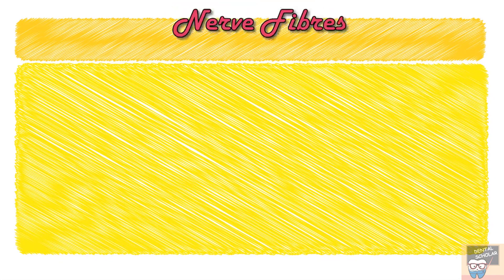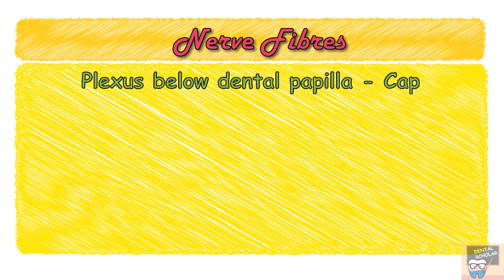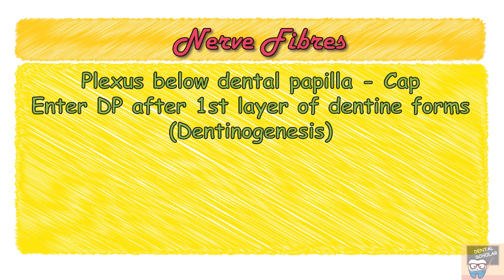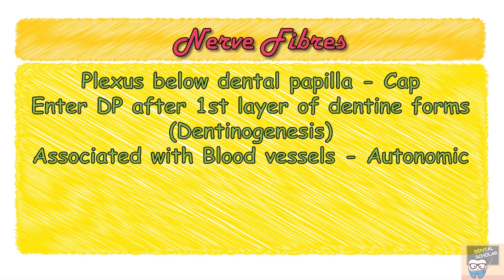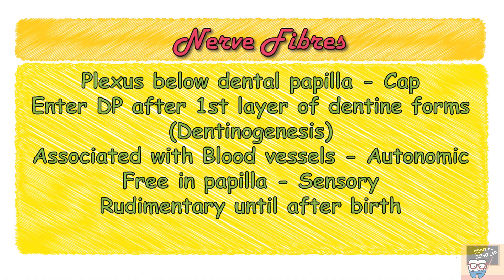Nerve fibers form a plexus below the dental papilla in the cap stage, but enter the dental papilla only after the first layer of dentine is formed — that is, after the beginning of dentinogenesis in the late bell stage. Nerve fibers associated with blood vessels are autonomic, while those free in the papilla are sensory. Innervation is rudimentary at birth and becomes mature once the tooth erupts into the oral cavity.